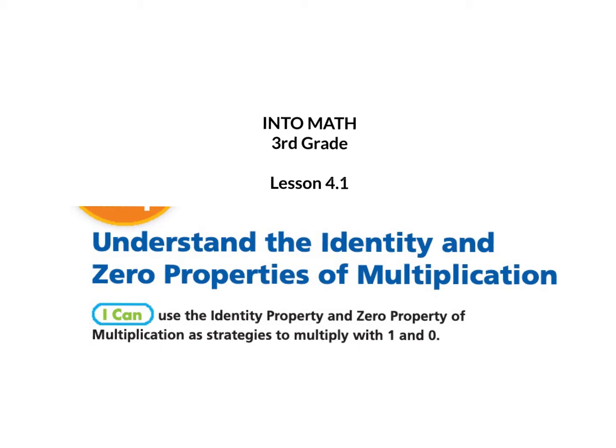I can use the Identity Property and Zero Property of Multiplication as strategies to multiply with 1 and 0.